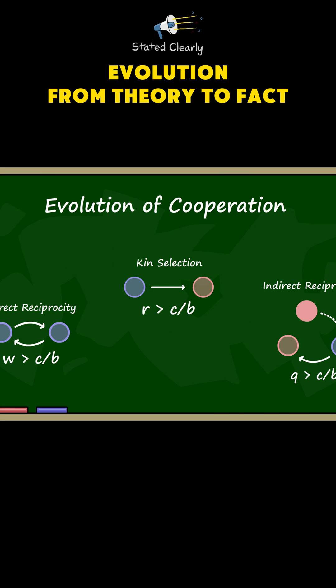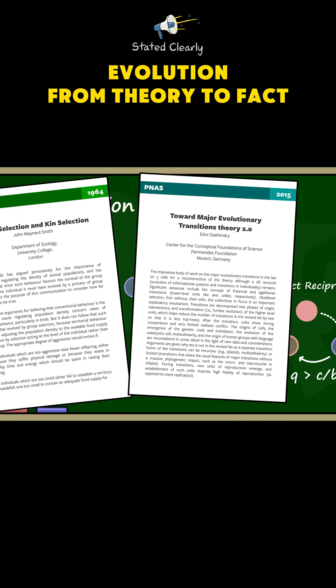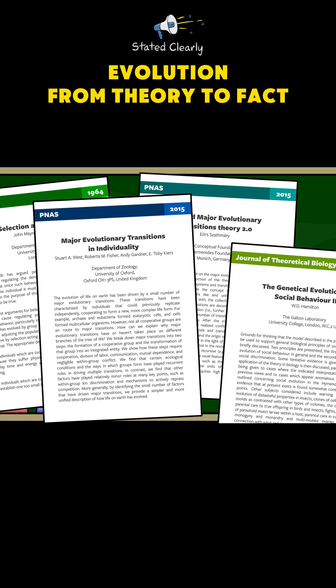Models describing natural situations that might promote the evolution of major transitions have been put forth by scientists such as John Maynard Smith, Iorce Sankhamari, Stewart West, and W.D. Hamilton.